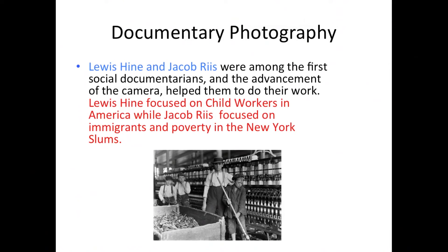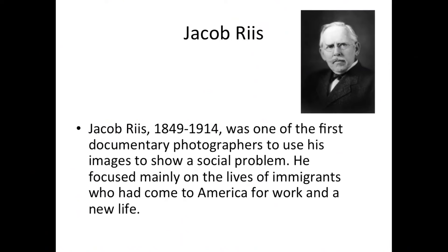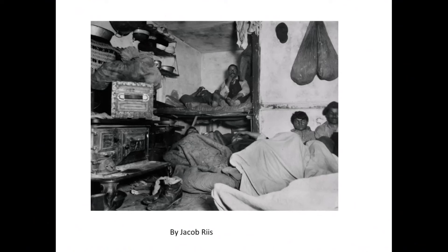Jacob Riis, from 1849 to 1914, was one of the first documentary photographers to use his images to show a social problem. He focused mainly on the lives of immigrants who had come to America for work and a new life. This picture shows the immigrant people he documented.